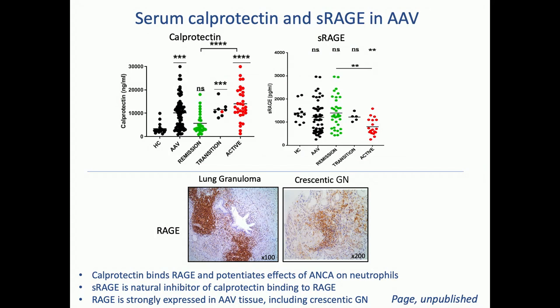Let me show two examples. First, calprotectin — a DAMP — binds to RAGE, the receptor for advanced glycation end products, and activates cells, potentiating the effects of ANCA. Calprotectin is very high in patients with active disease, less so in remission. Calprotectin is normally inhibited in the circulation by soluble RAGE, whose levels are very low in active vasculitis. The receptor RAGE is highly expressed in tissue of patients with active disease. So we've got this dangerous associated molecule in high levels, unopposed by its inhibitor, binding to high levels of this receptor and potentiating injury. Interfering with the calprotectin-RAGE pathway is a therapeutic avenue we're exploring.